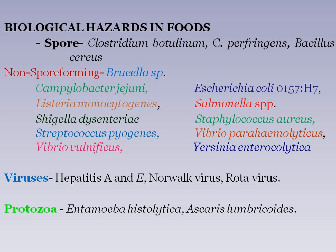Non-spore-forming bacteria include Brucella species, Campylobacter jejuni, Escherichia coli, Listeria monocytogenes, Salmonella species, Shigella dysenteriae, Staphylococcus aureus, Streptococcus pyogenes, Vibrio parahaemolyticus, Vibrio vulnificus, and Yersinia enterocolitica. Viruses such as Hepatitis A, Hepatitis E, Norovirus, and Rotavirus can also produce harmful effects.